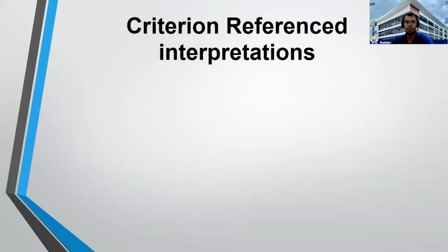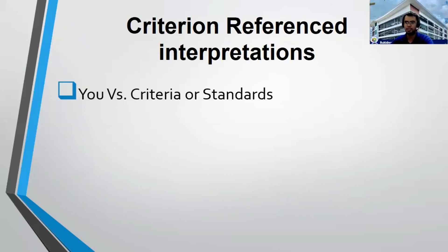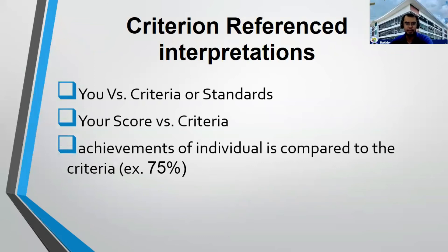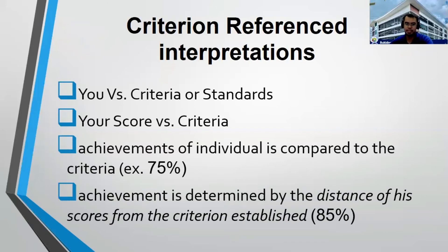Now let us go to criterion reference interpretations. It means you versus criteria or standards — your score versus the criteria, or achievement of individuals is compared to the criteria. For example, the LET exam has a criteria of 75%. So if your score is 73, you are below the criteria. If your score is 85, you are above the criteria. Achievement is determined by the distance of his score from the criterion established.